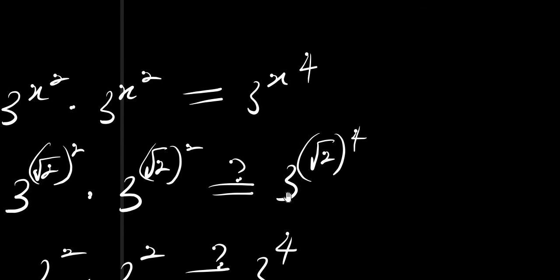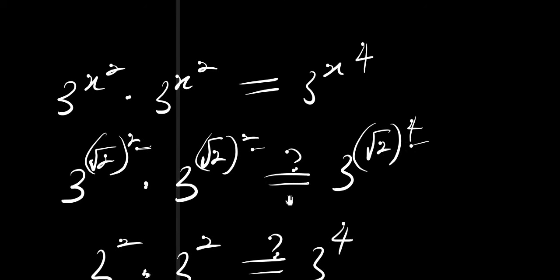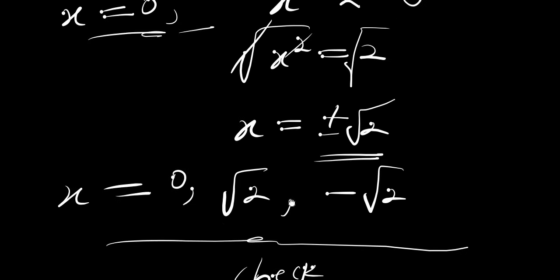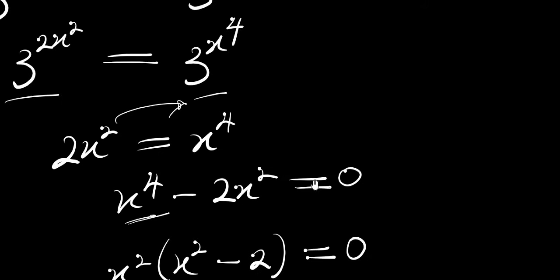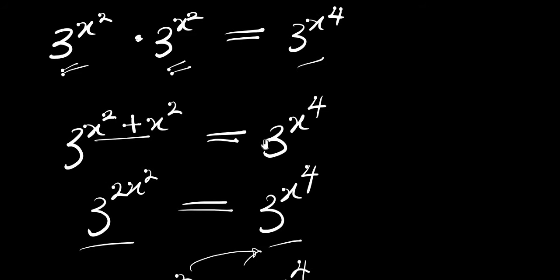The same result holds when x equals negative root of 2, because the exponents here are even, so we get the same answer. All three solutions are perfectly correct. That is it for this video — I believe you enjoyed the class. Please don't forget to subscribe and share this video with your friends. Thank you and goodbye.